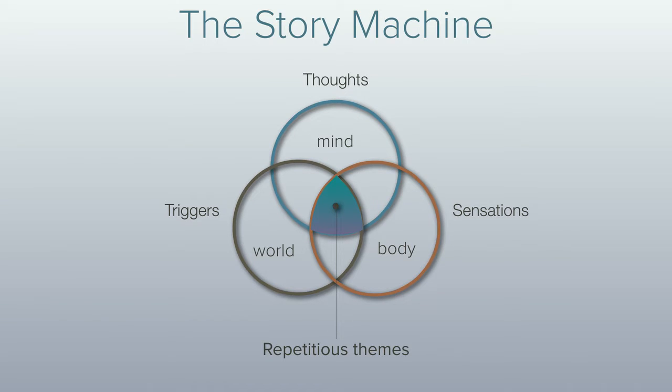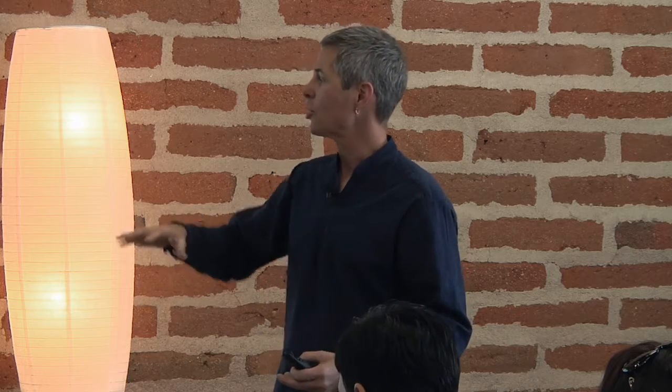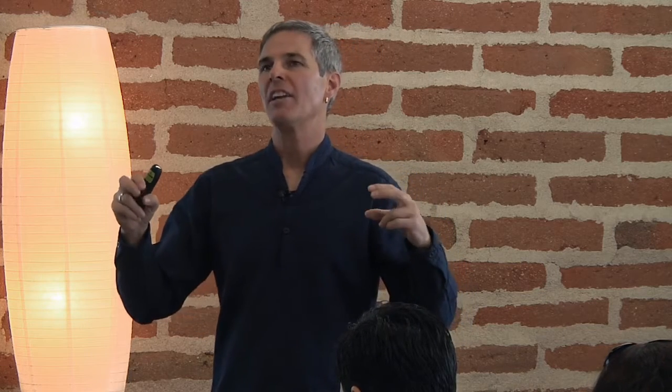So again, now there's a world, a context where sights and sounds can be triggering. You were at a place at a time when something happened to you that then you thought about. There's a mind that thoughts are flowing through and there's a body that is processing sensations. All of that is true, and what happens over time based on this flow of sights and sounds, thoughts and sensations, is a narrative develops and the narrative has repetitious themes.